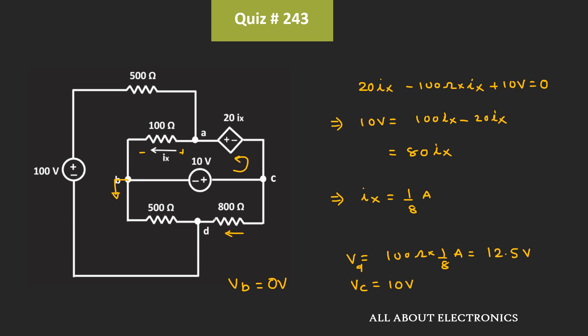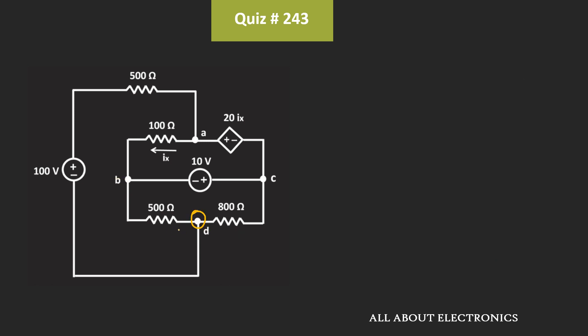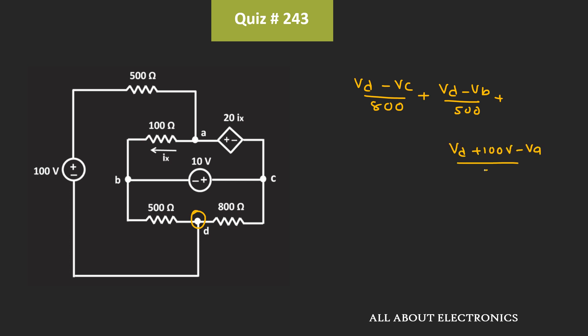But here, to find the voltage across this 800 Ohm resistor, we need to find the voltage Vd. So for that, let's apply the KCL equation at this node. Applying the KCL equation, we can write: (Vd - Vc) / 800 Ohm + (Vd - Vb) / 500 Ohm + (Vd - Va) / 500 Ohm = 0.